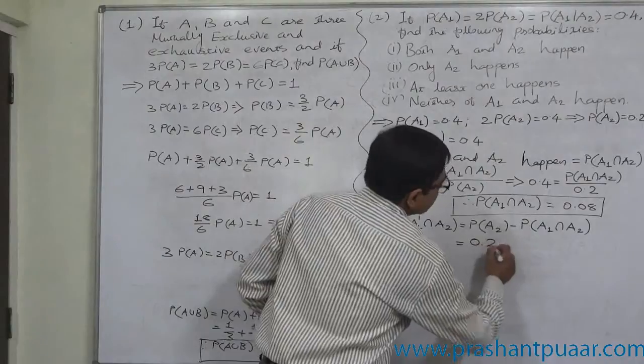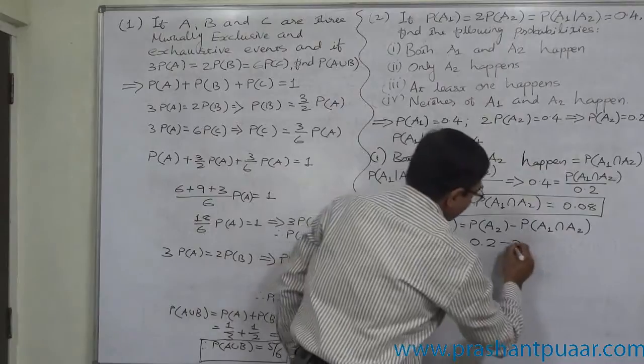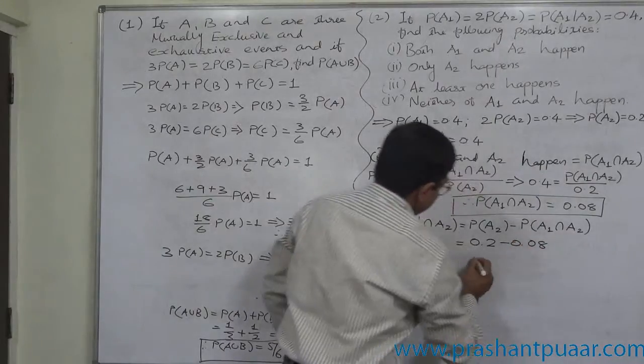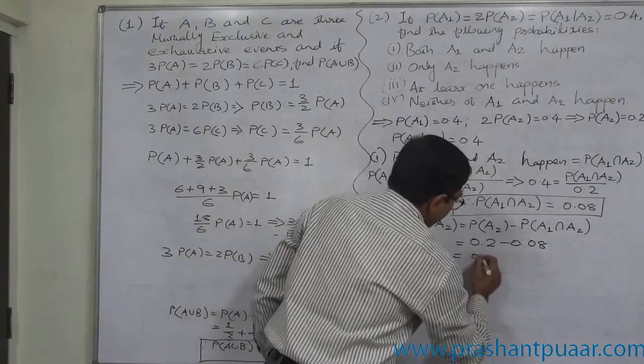Now, P of A2 is 0.2 and we just found P of A1 intersection A2 is 0.08. So ultimately the answer is 0.12.